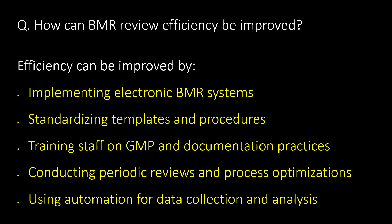How can BMR review efficiency be improved? Efficiency of BMR review can be improved by implementing electronic BMR systems, standardizing templates and procedures, training staff on GMP and documentation practices, conducting periodic reviews and process optimizations, and using automation for data collection and analysis.